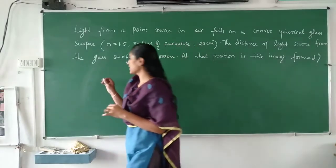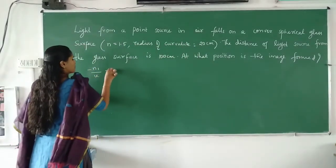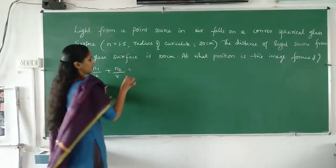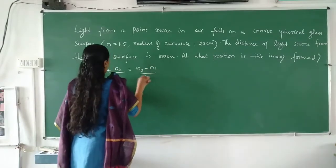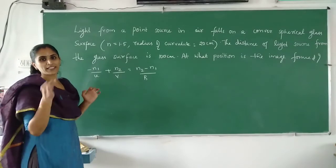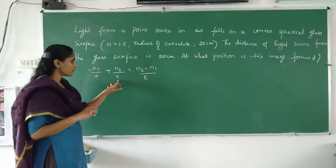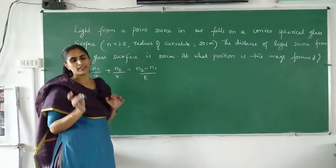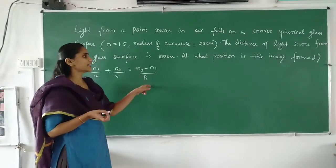So you know the formula. The equation is: N1 by U plus N2 by V is equal to N2 minus N1 divided by R. N1 is the refractive index of the medium in which the object is kept. U is object distance. V is image distance. N2 is the refractive index of the medium where the image is formed. R is the radius of curvature.